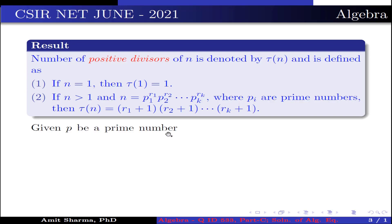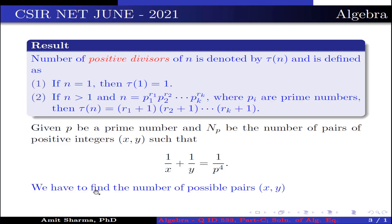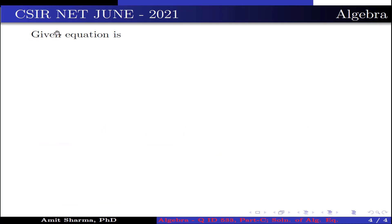Now, given P be a prime number and NP be the number of pairs of positive integers (x, y) such that 1/x + 1/y = 1/P^4. We have to find the number of possible pairs (x, y) which satisfy the given equation.